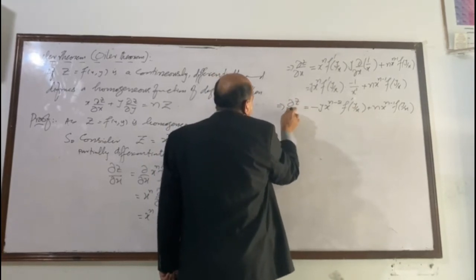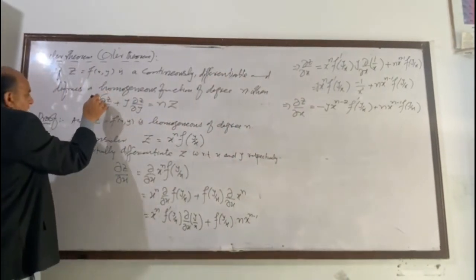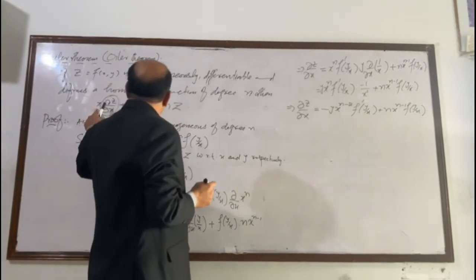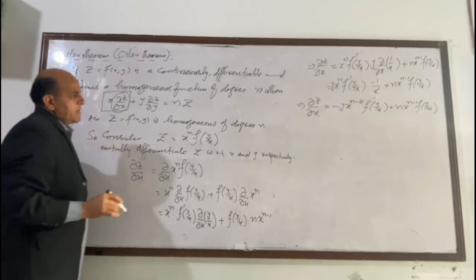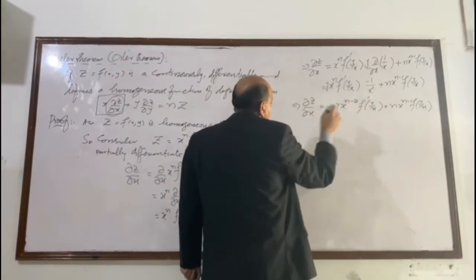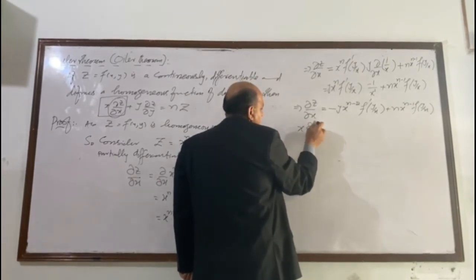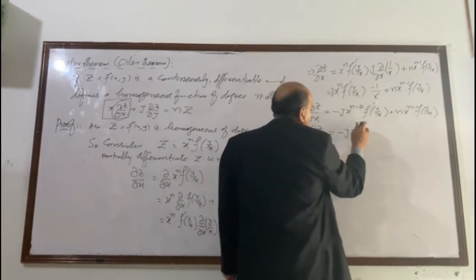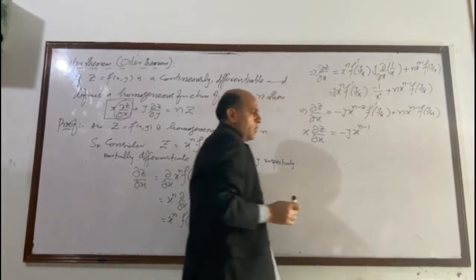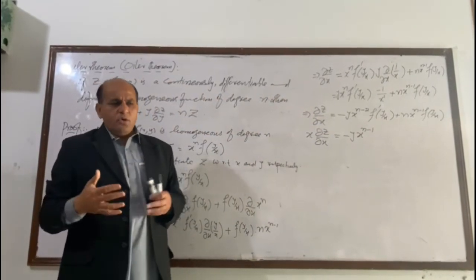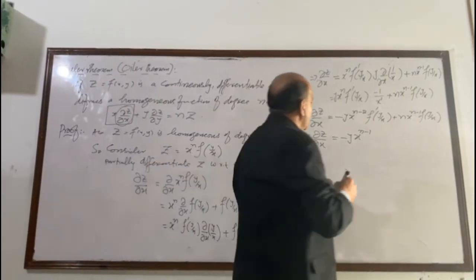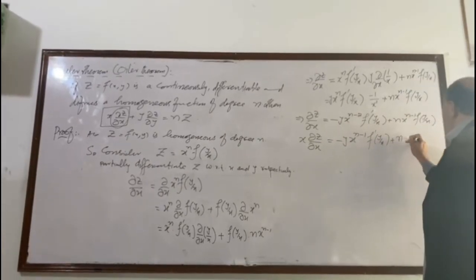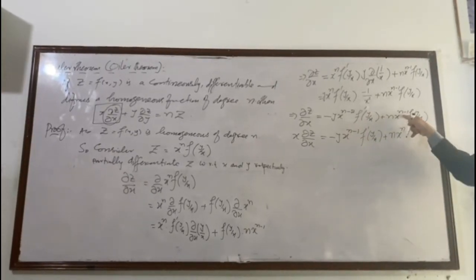We have now found ∂z/∂x. Next, we multiply this relation throughout by x. Multiplying by x, this becomes x · (∂z/∂x) = −y · x^(n−1) · f′(y/x) + n · x^n · f(y/x). This is our first relation.